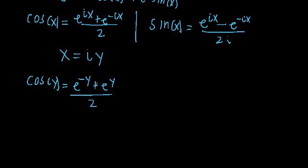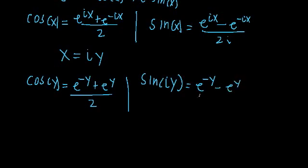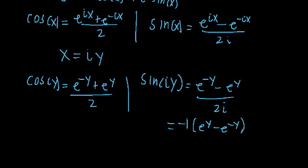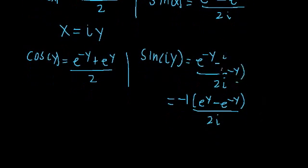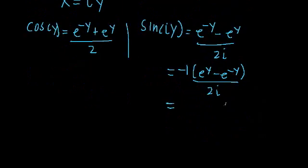It's important to keep in mind that these are no longer complex exponentials — these are now real exponentials. Likewise, sine of iy is equal to e to the negative y minus e to the y all over 2i. We factor out a negative 1 from the numerator, giving negative 1 times e to the y minus e to the negative y over 2i. Since i squared equals negative 1, we can simplify to get i times e to the y minus e to the negative y all over 2.